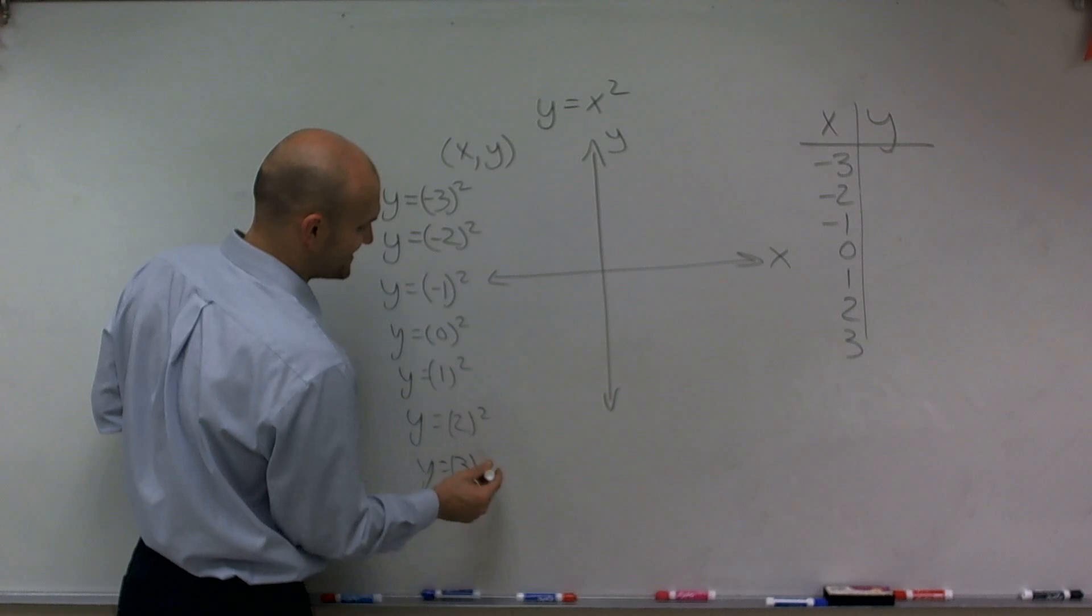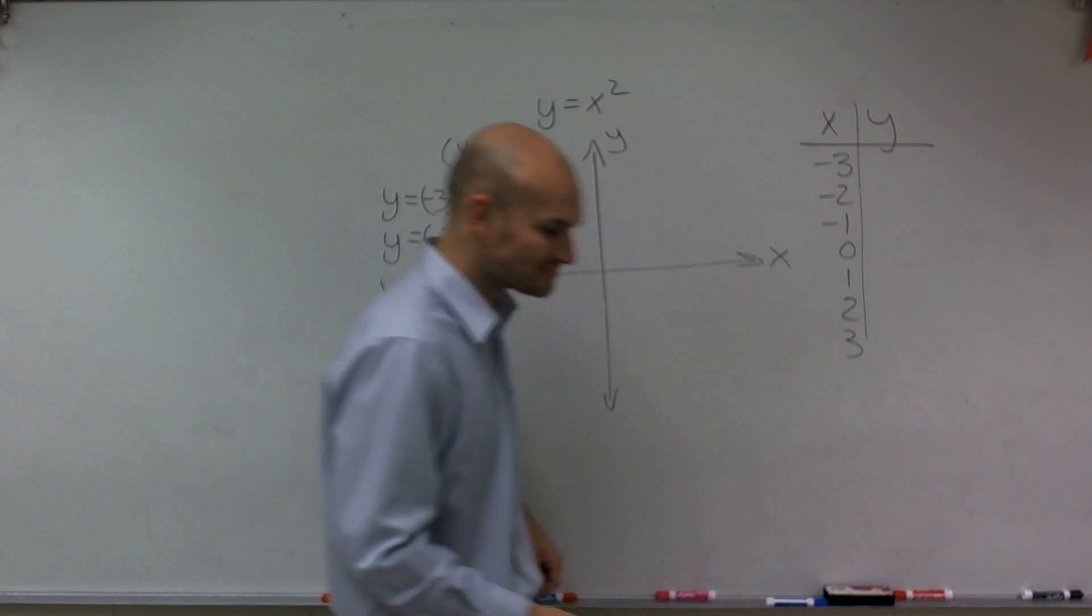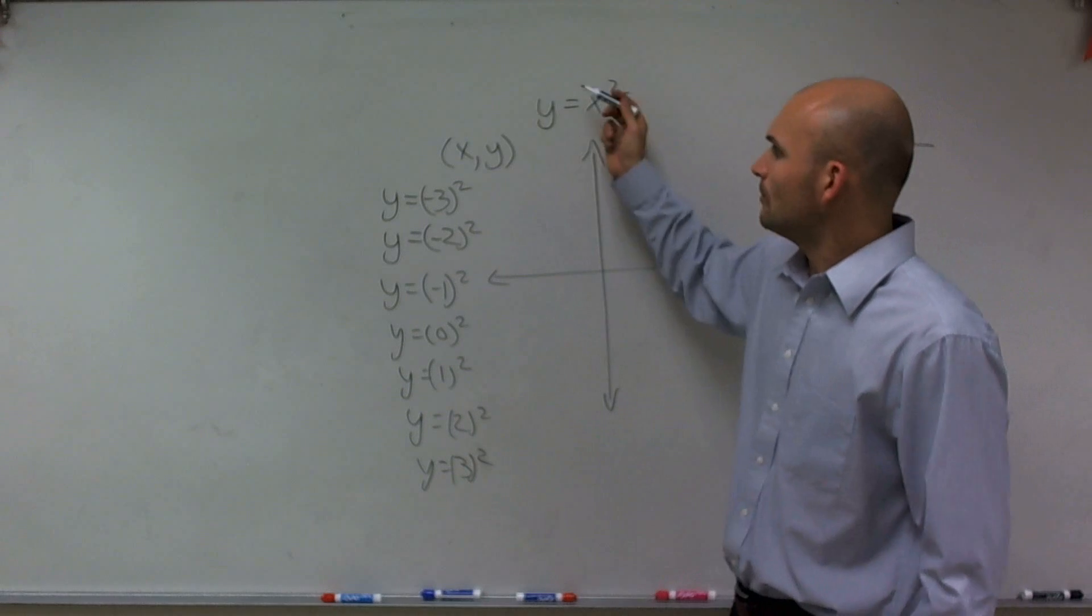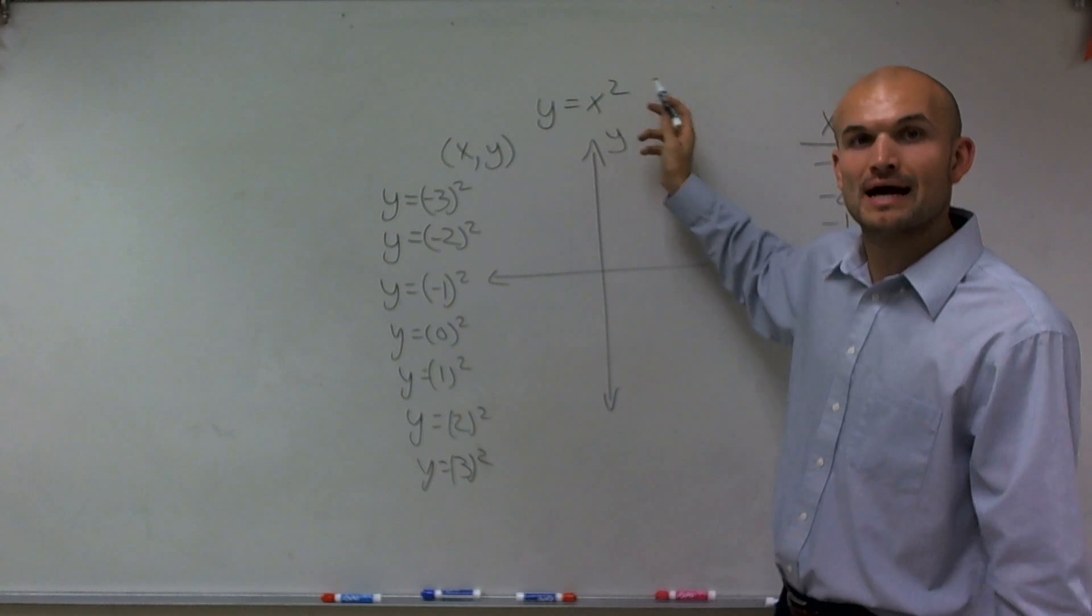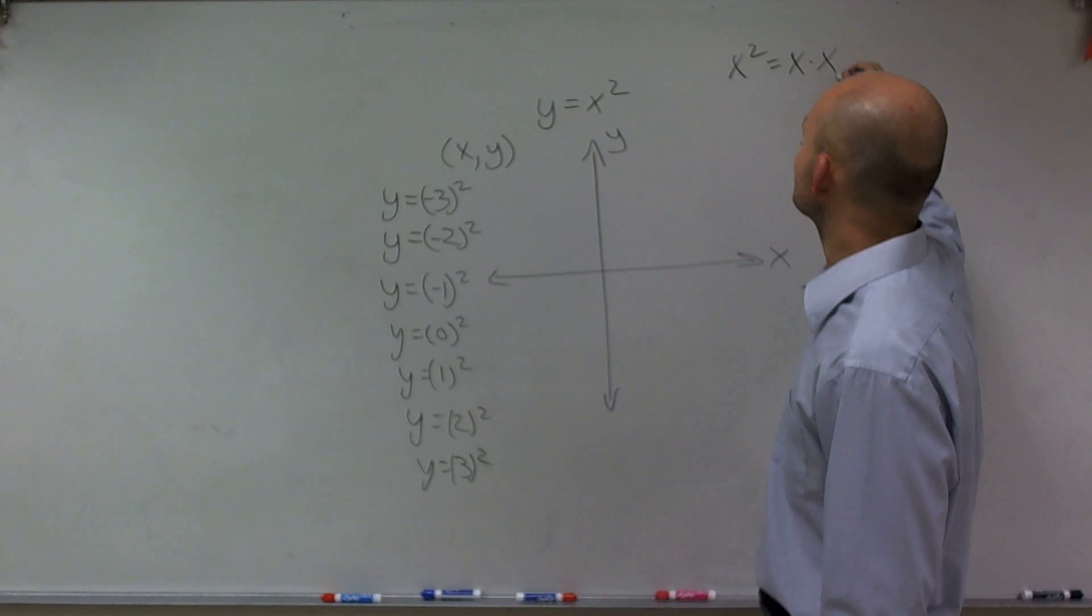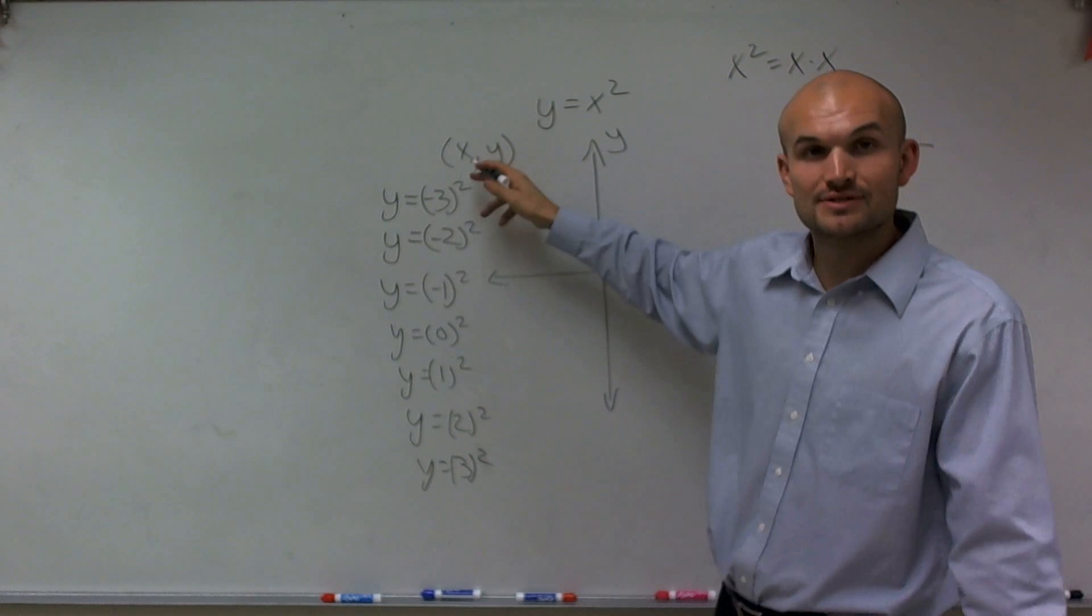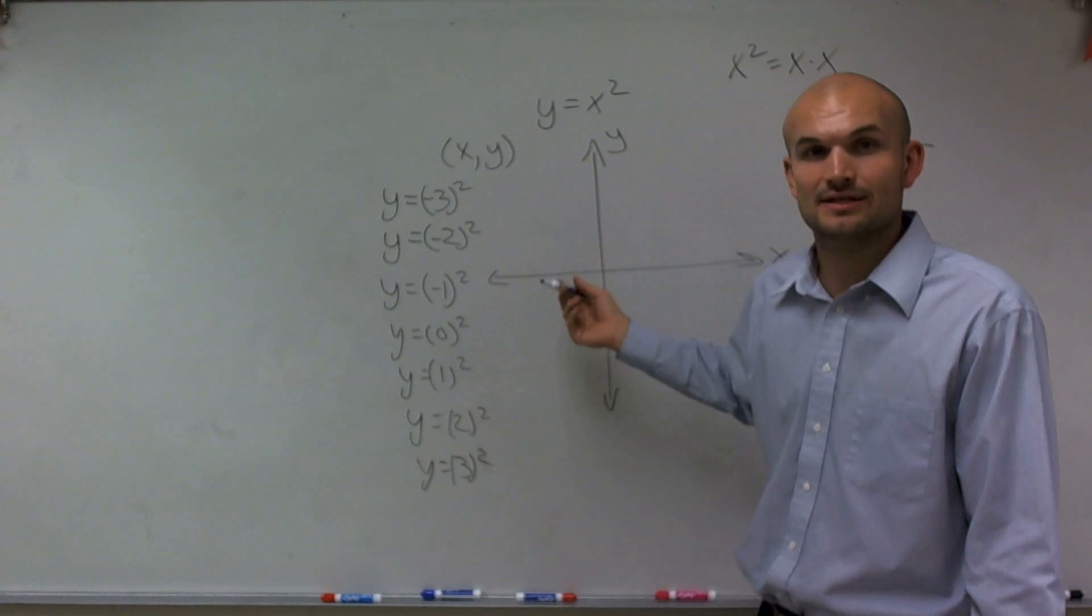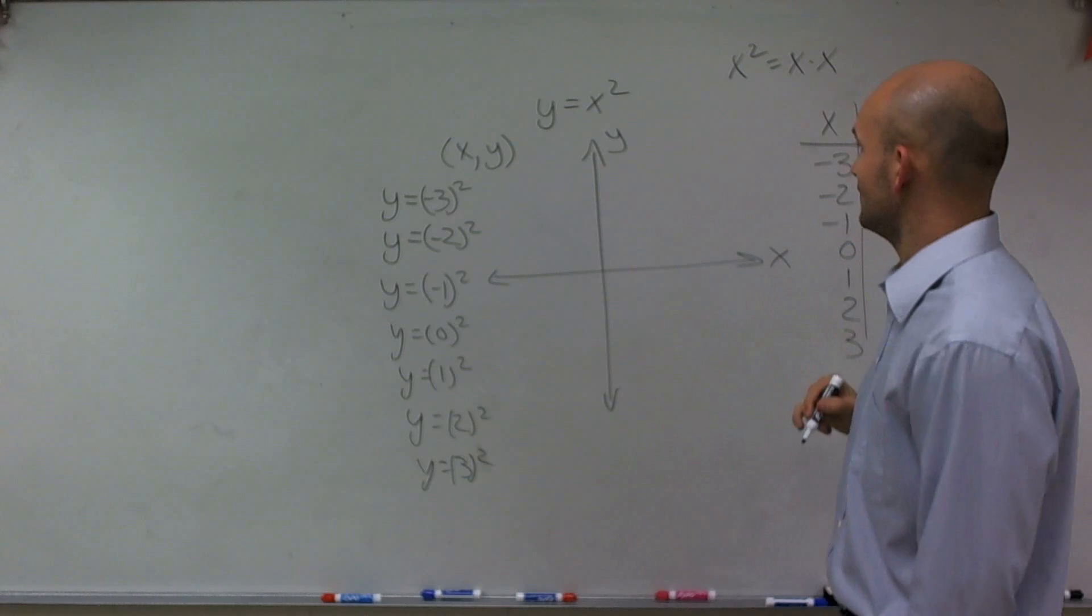That's a cube, not a squared. So let's just go and simplify. What does the square mean again, right? Well, the square means x multiplied by itself. I could write it like this: x squared equals x times x. So negative 3 squared means negative 3 times negative 3. Well, negative 3 times negative 3 is equal to positive 9. So I'm going to write that right there.